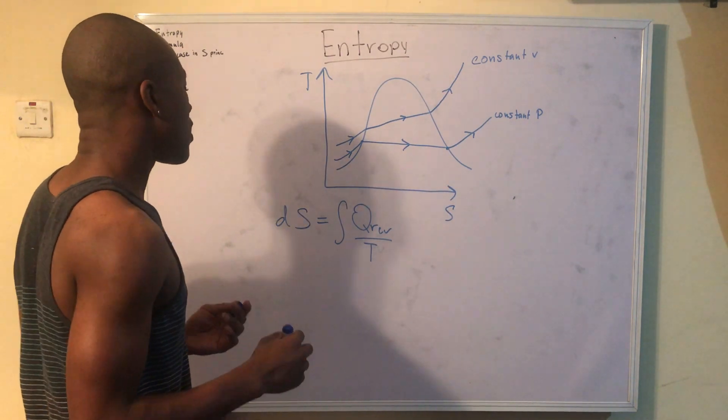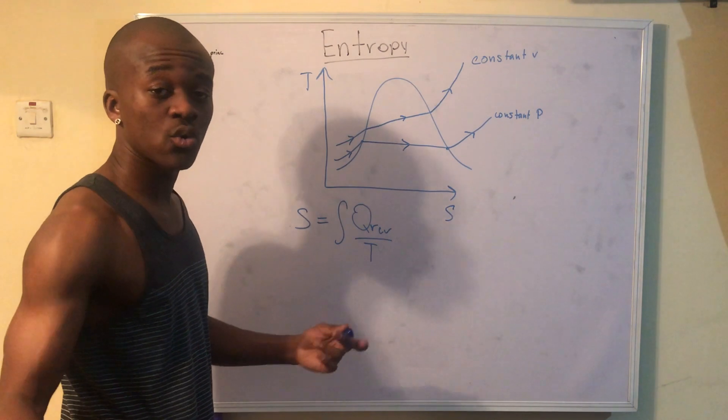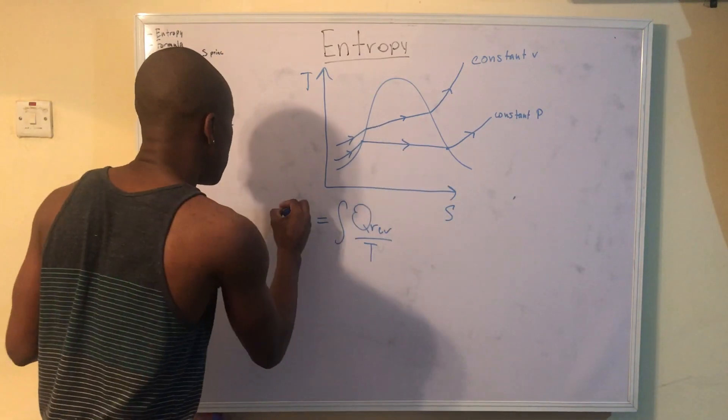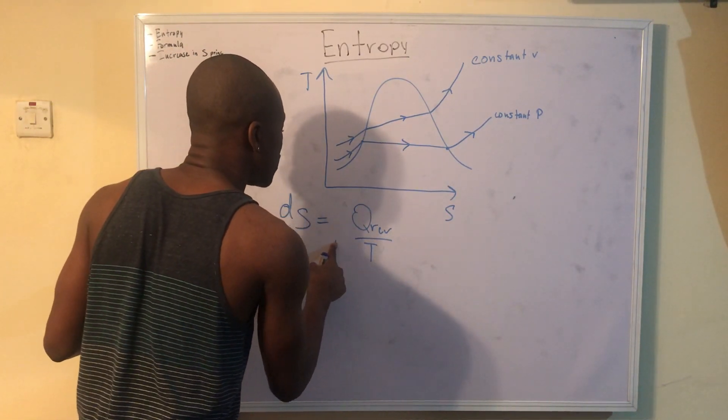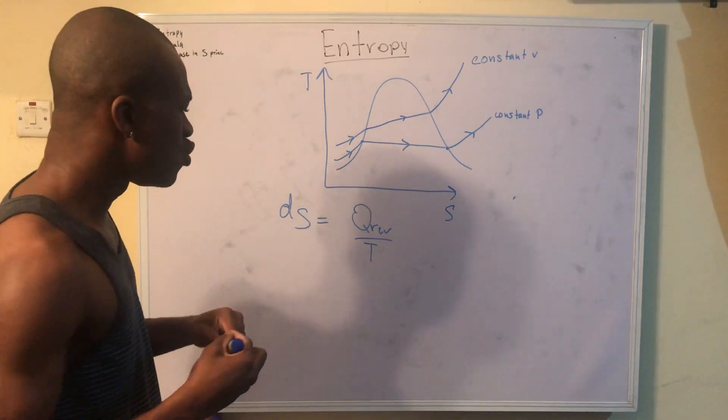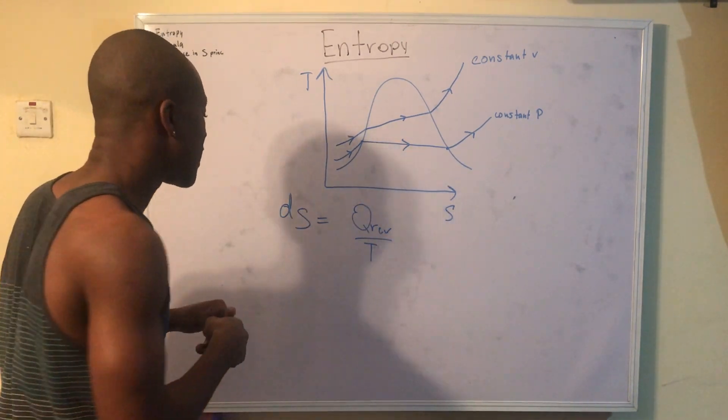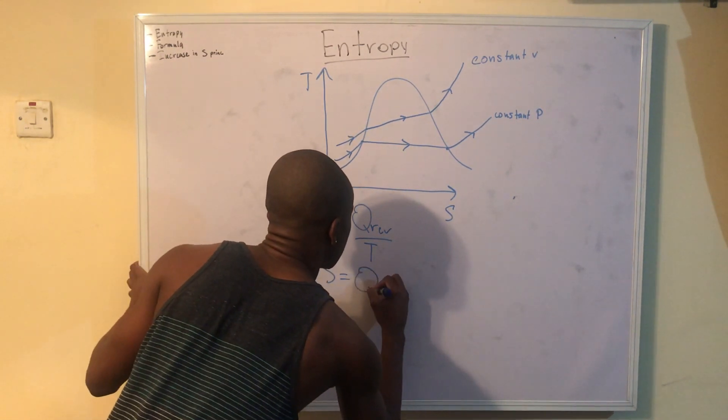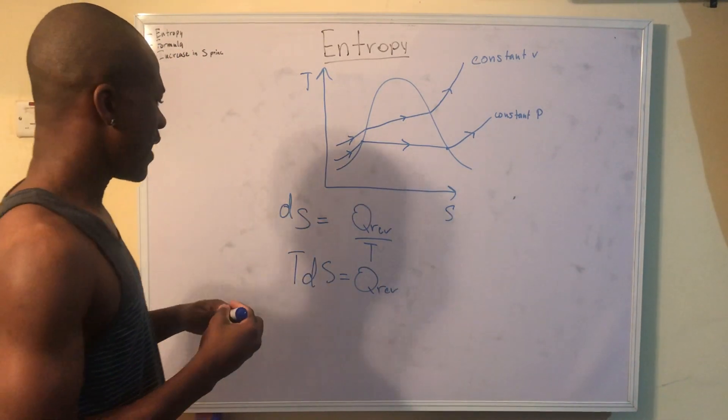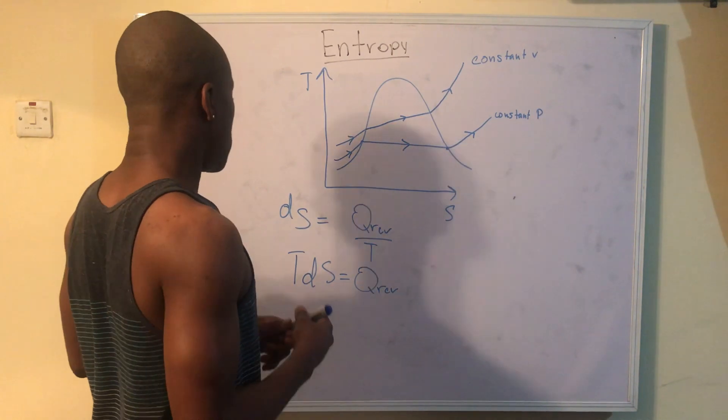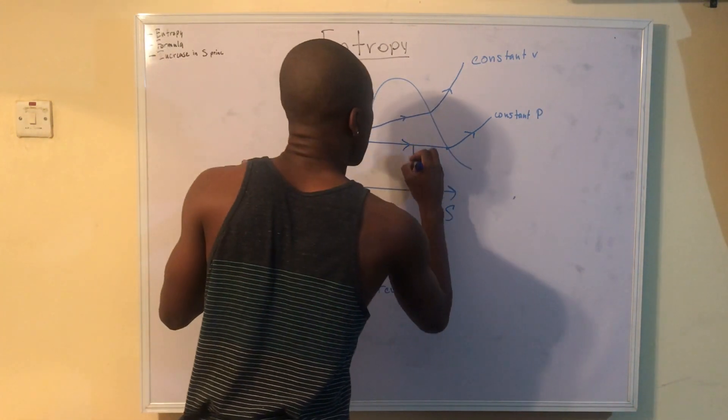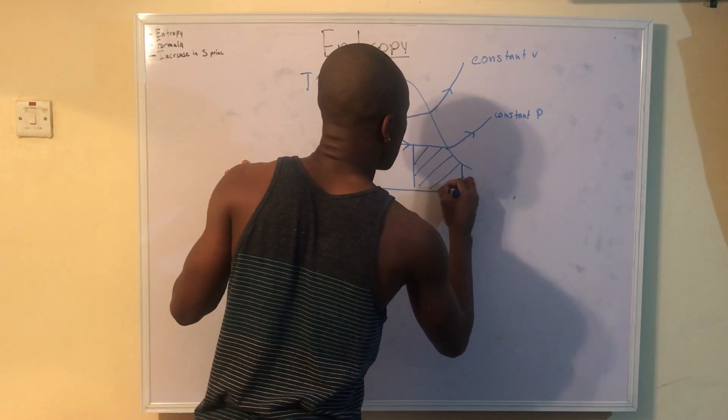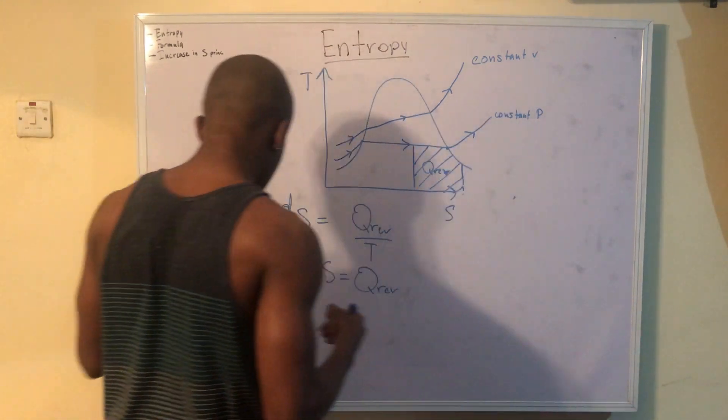And if I were to take the integral of both sides, right? I'm going to get DS, or if I were to take the derivative, rather, I'm going to get DS, and that integral sign goes away, right? What I can do is multiply this T to the other side, and I end up getting this. TDS equals Q reversible. And you're allowed to do that, right? And basically, what we end up getting is that the area under the curve, so let's say I had this, this is what gives me my Q. So that's a good thing to know, okay?